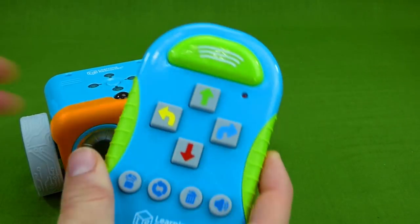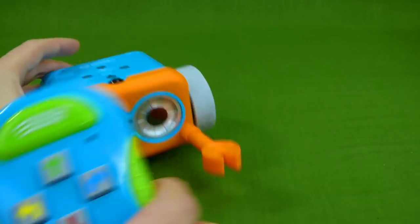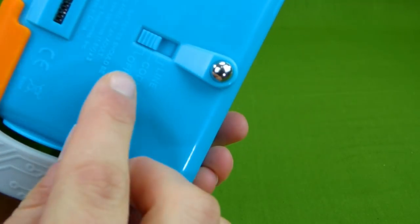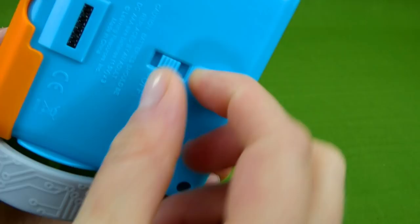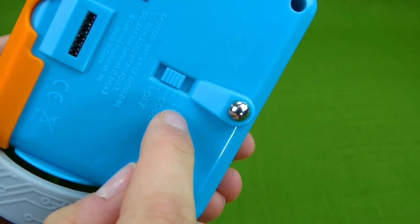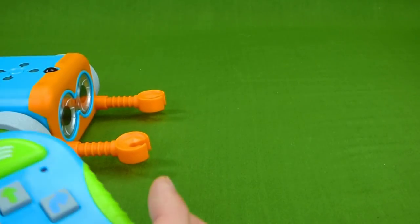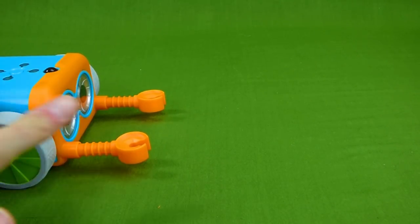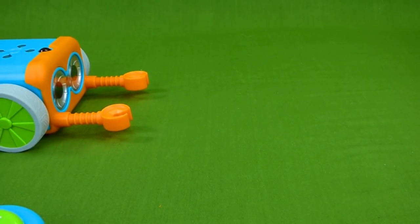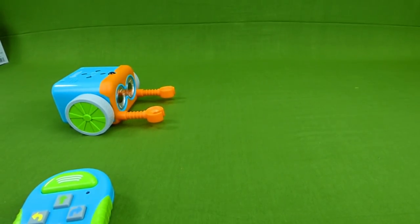And then we have our remote. And let's go ahead and turn him on. And you have to choose if you want to do coding or if you want to do the line. So we're gonna start with coding. And here is how it works. So let's back this up so you can see better. There we go.